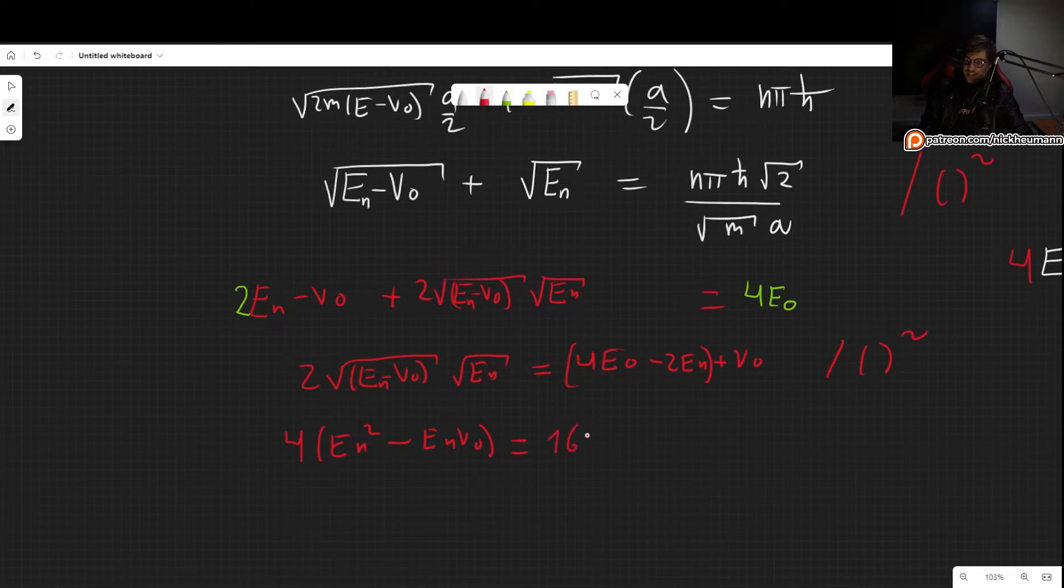So this is 4 times EN squared minus ENV0. And now let's square this part: from the first term squared we get 16E0 squared. Then we get two times these two terms, so minus 16E0EN. Then we get this part squared, so plus 4 times EN squared. And then we get 2 times V0 times (4E0 minus 2EN), and finally V0 squared.